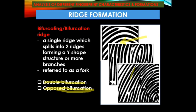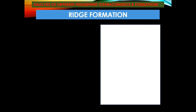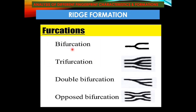Next is the opposed bifurcation — from the word itself, these are two bifurcations which are opposed to one another. In summary, we have: bifurcation (a single ridge splitting into two, forming a Y-shape), trifurcation (splitting into three), double bifurcation (a single ridge forming two bifurcations), and the opposed bifurcation (two bifurcations opposed from one another).